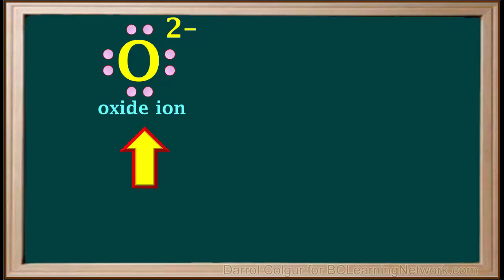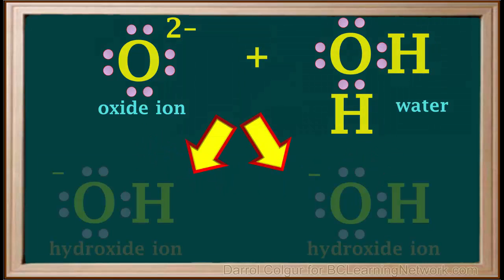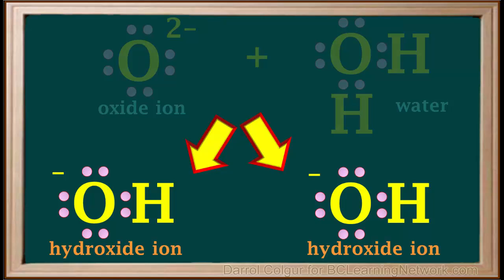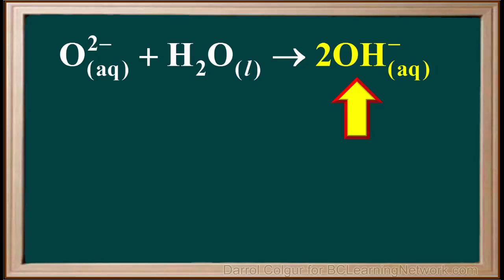So the net reaction can be summarized as saying an oxide ion reacts with a water molecule to form 2 hydroxide ions. The equation for this reaction is O2- plus water gives 2OH-.